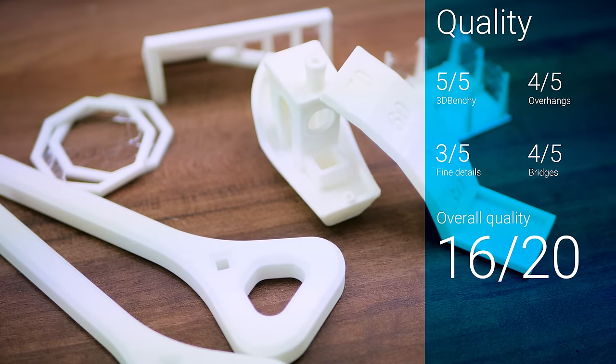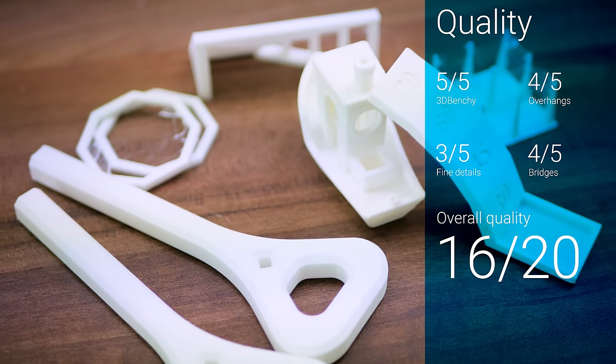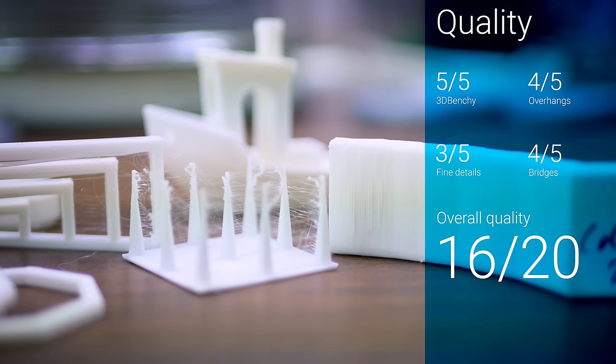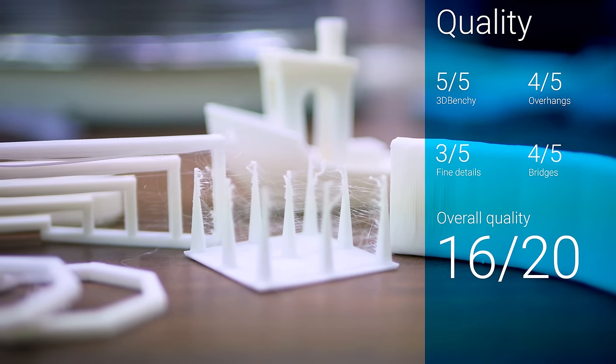Print quality at 210 degrees on the nozzle and 55 degrees Celsius on the PEI bed is good with a tendency of stringing and average performance for bridges and overhangs.